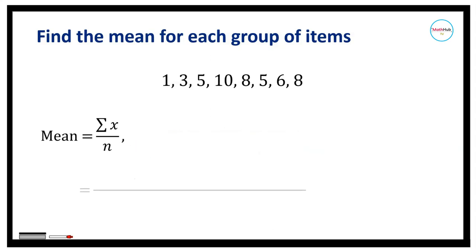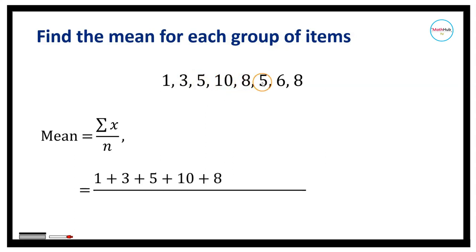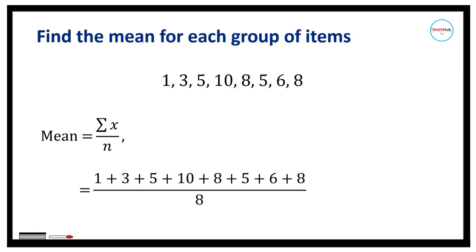So in this case, the mean is equal to 1 plus 3 plus 5 plus 10 plus 8 plus 5 plus 6 plus 8, divided by the number of data entries, which is 8. Adding the numerator, that is equal to 46, divided by 8, which gives us 5.75.